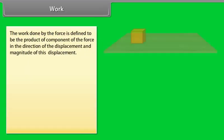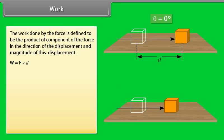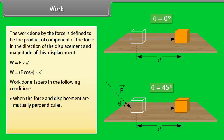Work. The work done by the force is defined to be the product of component of the force in the direction of the displacement and magnitude of this displacement. W = F × D, or W = F cos θ × D. Work done is zero in the following conditions: when the force and displacement are mutually perpendicular, when the force is zero, when the displacement is zero.